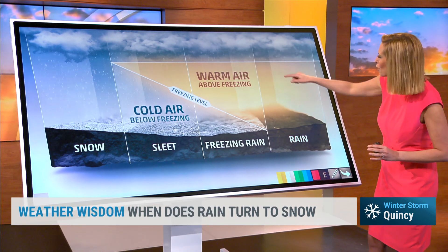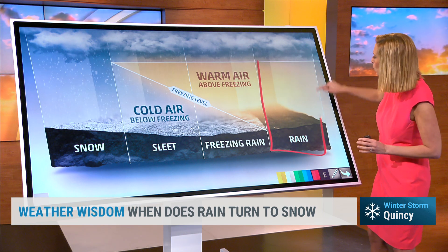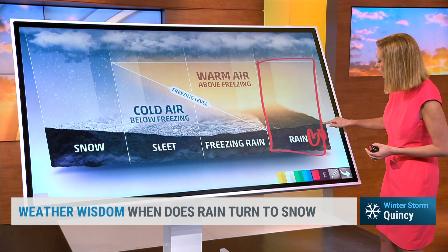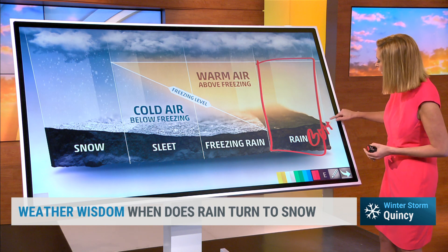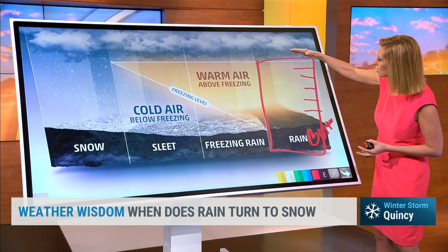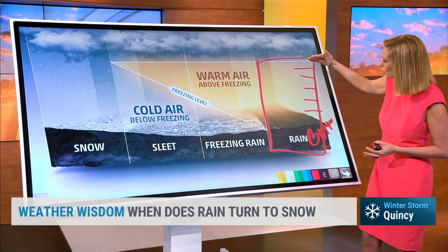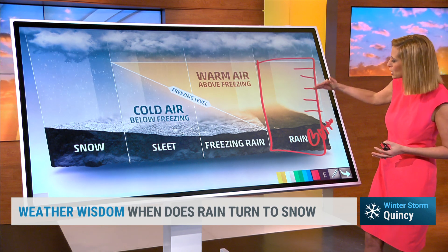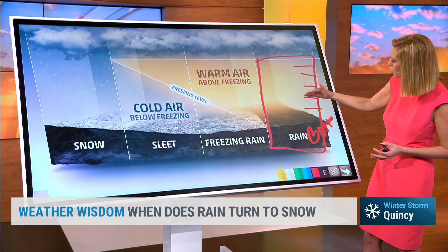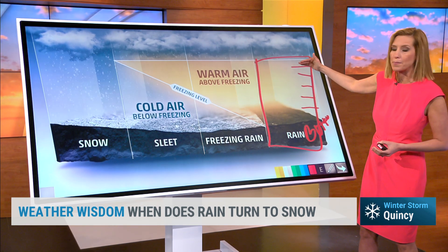So obviously, if you look at the atmosphere — which, by the way, is like a hamburger — we live at the bottom bun, right where we live, and then you go all the way up through the different layers. You have to look at those different layers because the temperature can actually be different through all of them: the burger part, then the tomato, the lettuce, all the way to the top bun.